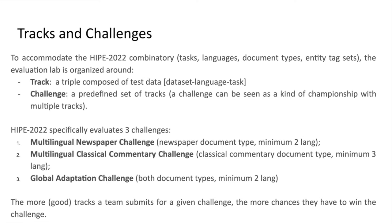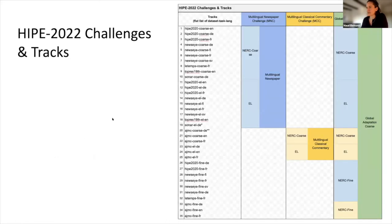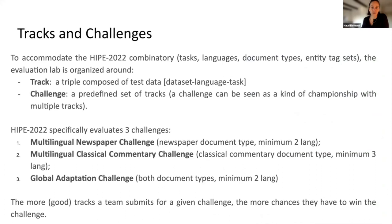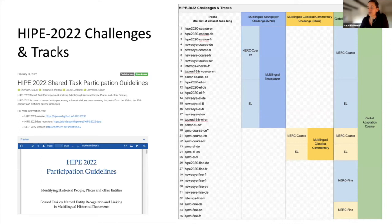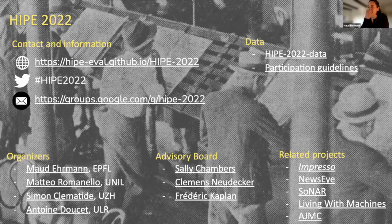It's a bit like the Olympic Games — you have tracks and you try to win all of them to win the final. There are 35 possible track combinations of datasets, tasks, and languages. Now that the data is out, we hope teams will develop nice systems to tackle all this difficult data. If you want to know more, I encourage you to check the participation guidelines, which explain all these settings, and of course the website. Thank you for your attention.